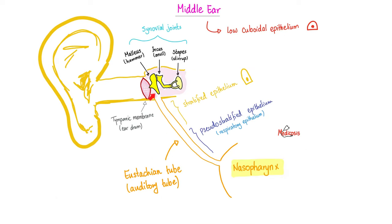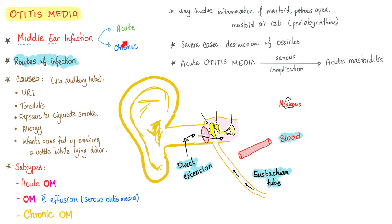Otitis media is inflammation of the middle ear. It could be acute or chronic. Acute means the classic signs: redness, hotness, swelling, pain, loss of function. Chronic or recurrent otitis media may present differently. It usually originates from upper respiratory tract infections spreading from the nasopharynx into the middle ear via the Eustachian tube, or via direct extension, or hematogenously. Risk factors include exposure to cigarette smoke and infants fed from a bottle while lying down — gravity does its thing.